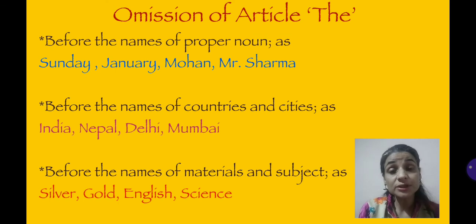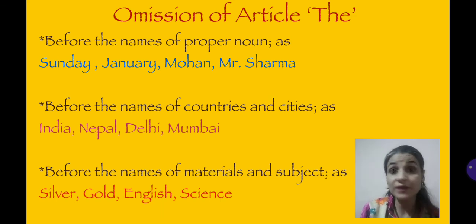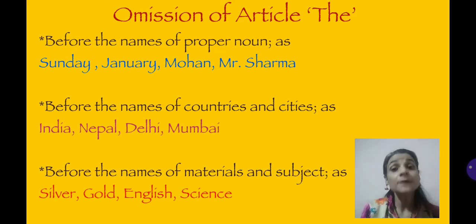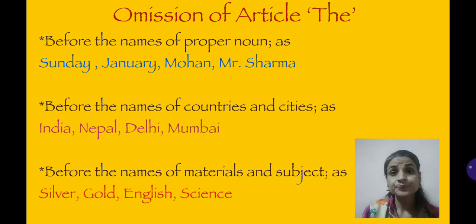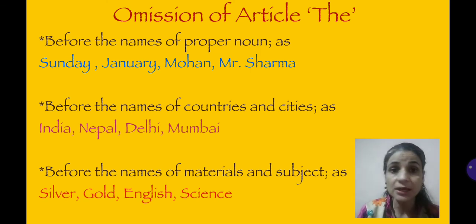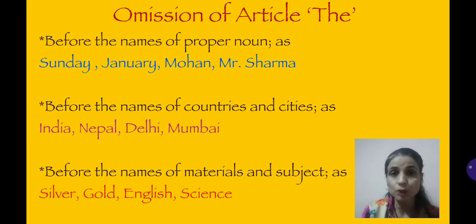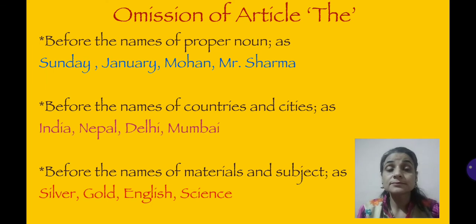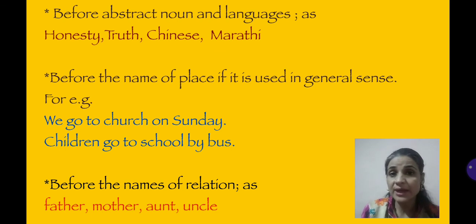Now, this is very important, children — we have to learn where article 'the' is omitted, is not used. Everywhere we cannot use the article. So it is equally important to learn where article 'the' is not required. Number one: before the names of proper nouns — Sunday, Monday, Tuesday, January, February, March; Mishika, Amit, any proper noun; Mr. Sharma, Mrs. Gupta — before any proper noun, we will not use article 'the'. Next: before the names of countries and cities, we are not supposed to use article 'the' — like 'the India' or 'the Nepal' is wrong. Before the names of materials and subjects, and before abstract nouns and languages — German, Chinese, Marathi, honesty, truth, beauty — don't use article 'the'.